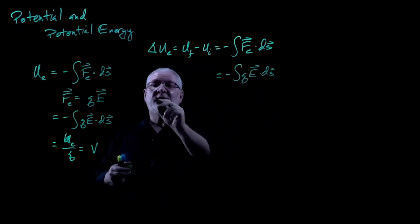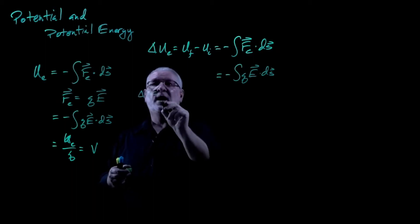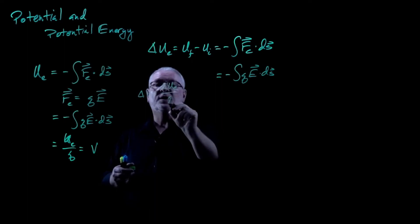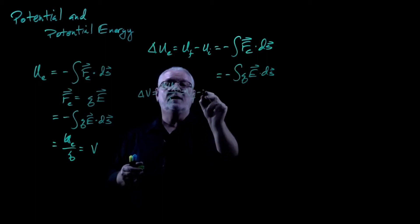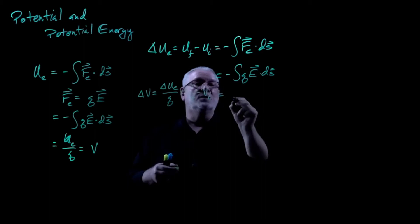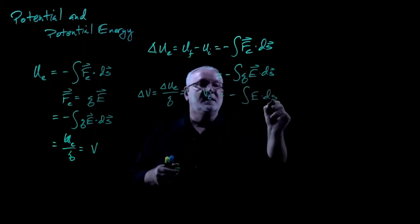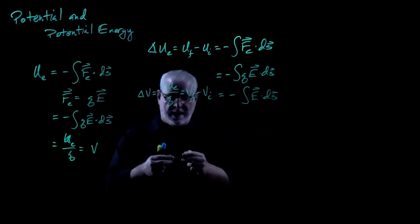And finally, if I want, I can express the voltage delta V as equal to delta UE over Q. And then that's going to equal the voltage final minus the voltage initial, and that then is going to be equal to negative the integral of E dot dS. The Q is eliminated because I've basically divided out by it.